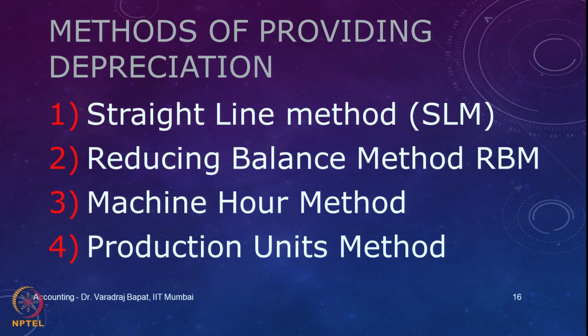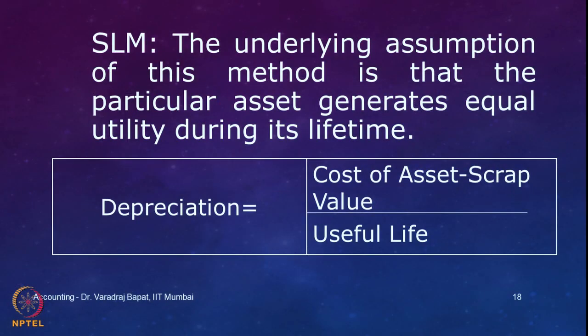Last time we discussed the straight line method. Suppose we purchased one asset — say machinery — for 1 lakh. Its useful life is 4 years and scrap value is 10,000. The depreciation every year: 1 lakh minus 10,000 equals 90,000, distributed over 4 years. So 90,000 divided by 4 is 22,500 per annum. The formula is cost of asset minus scrap value divided by useful life, and the depreciation remains constant throughout the useful life.